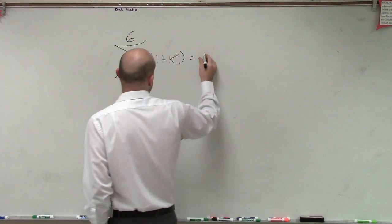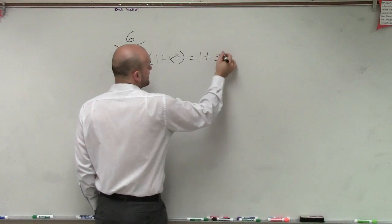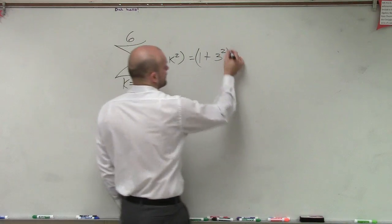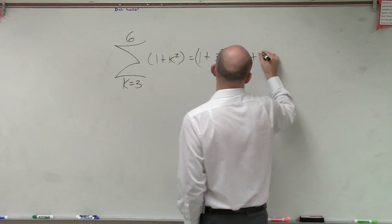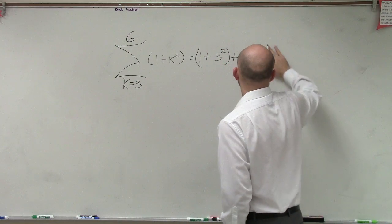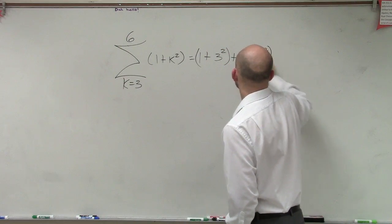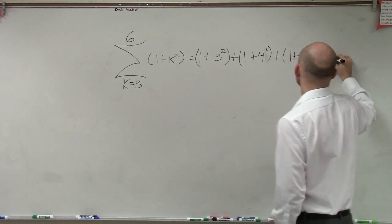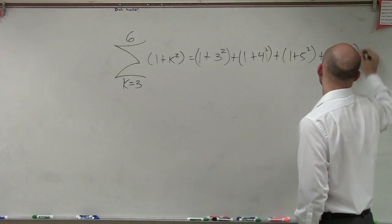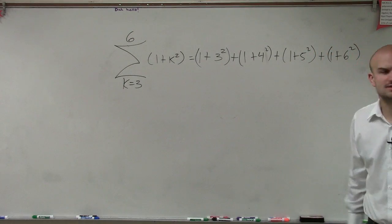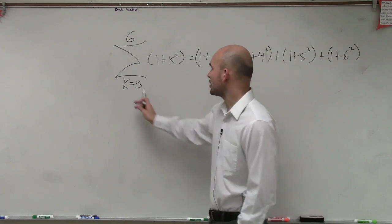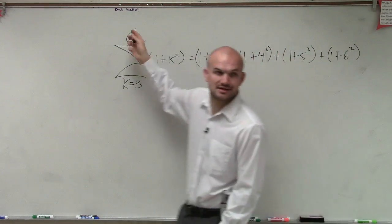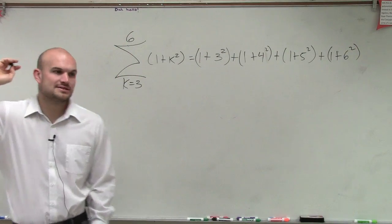So therefore, this equals 1 plus 3 squared, plus 1 plus 4 squared, plus 1 plus 5 squared, plus 1 plus 6 squared. Does everybody understand why I started first of all at 3, and then I end at 6 because that's going to be my terminal term — the last term we're going to use?